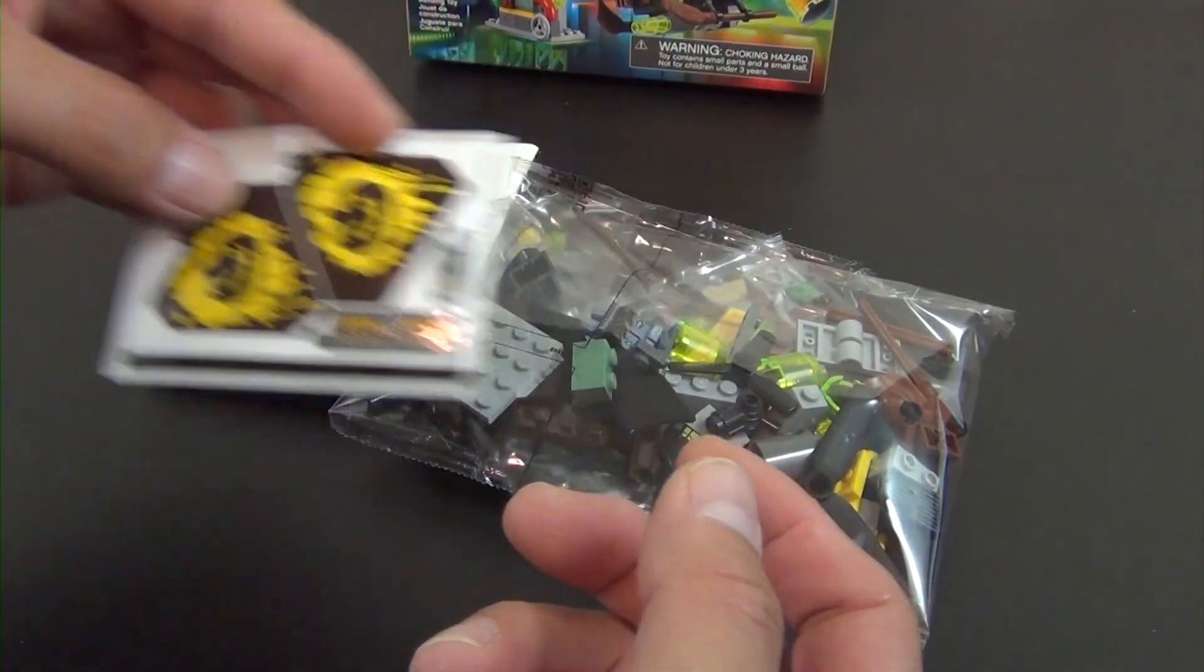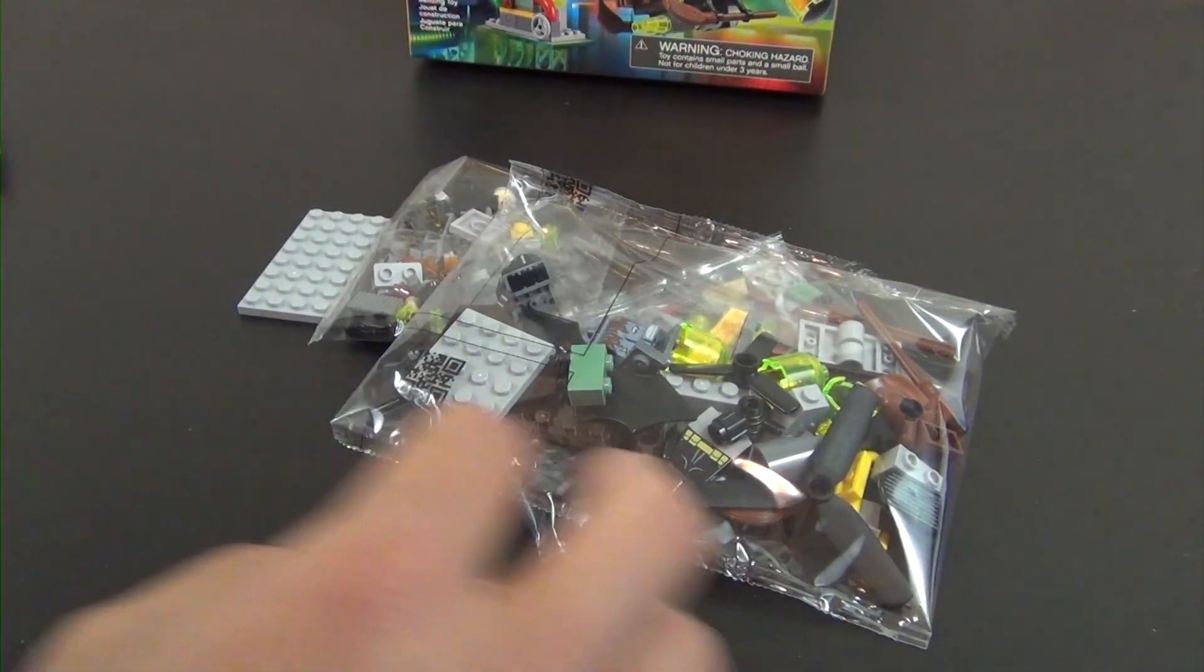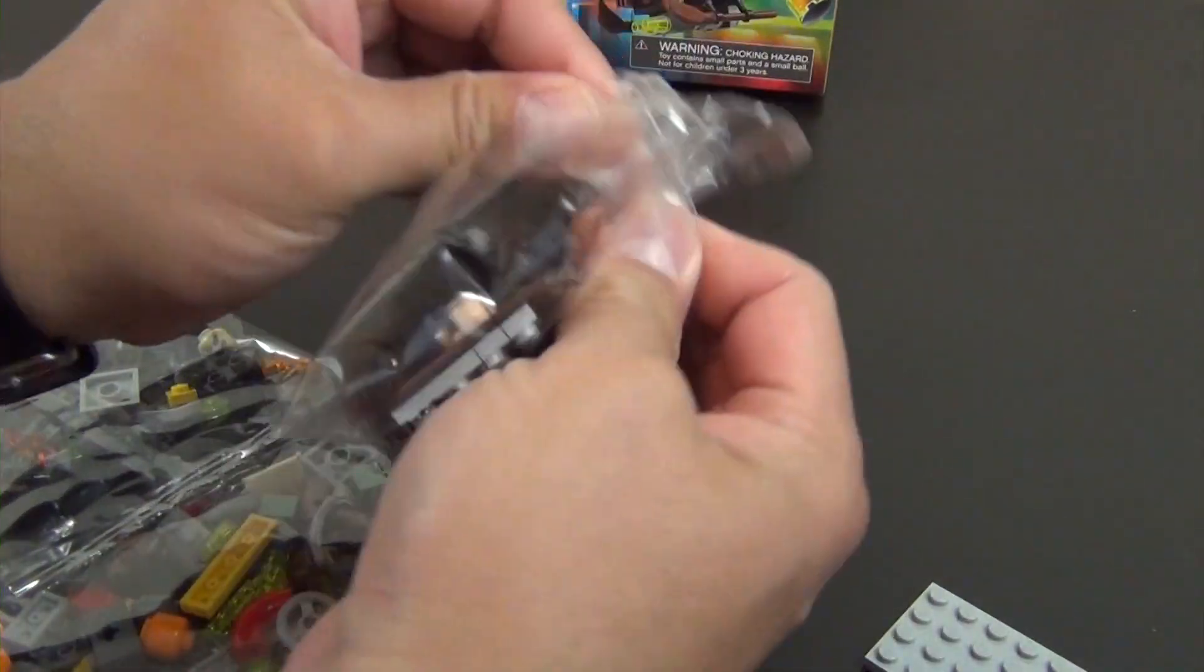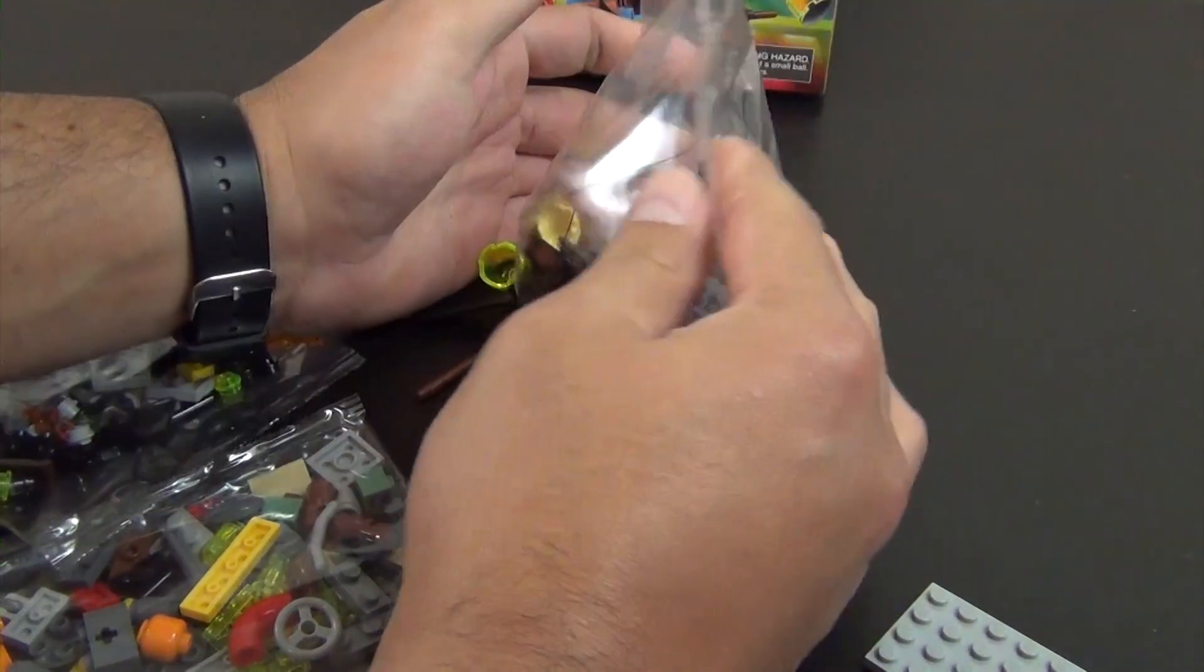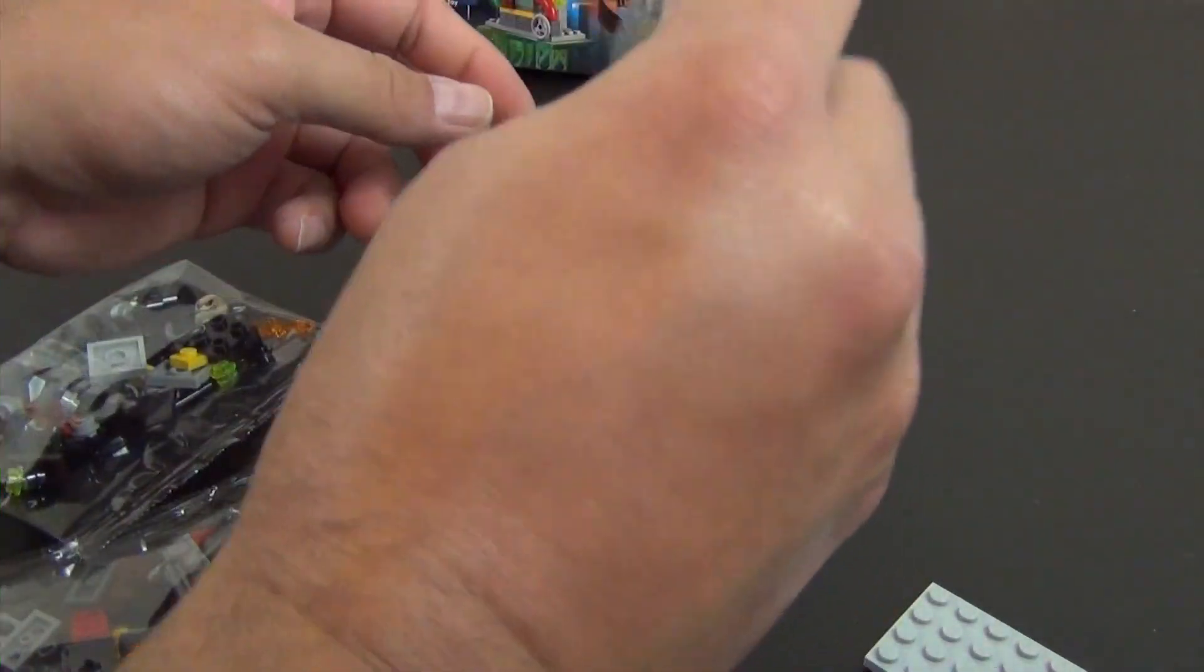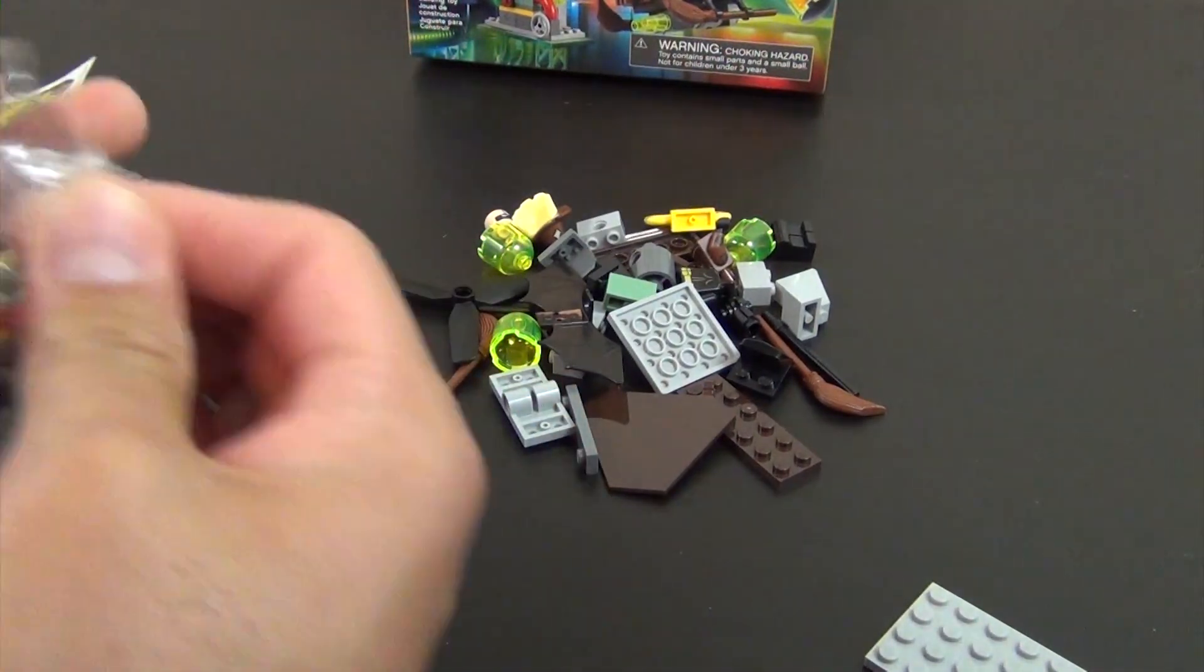Single instruction book that's folded in half and a loose plate, and of course our bags of parts. There's no numbered bags here, we're just going to dump them all out and start building.